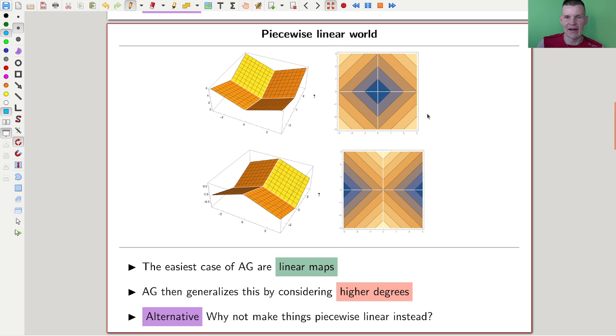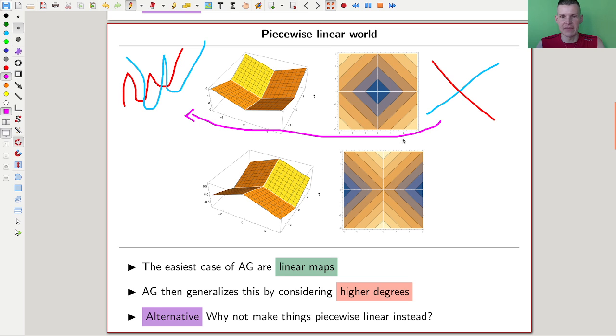So the easiest type of polynomial you can imagine is a line, right, a linear map, something like this. Here's another line, something like this. And then it was generalized by making it curvier, so higher degree polynomials are a little curvier, something like this, whatever. I can't really draw polynomials, but anyway they're like smoother, curvier. So it gets them more difficult.